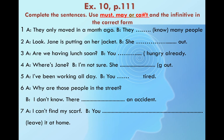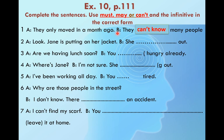They only moved in a month ago — they know many people. Can they know many people if they moved in just a month ago? They can't know many people yet. So: they can't know many people.